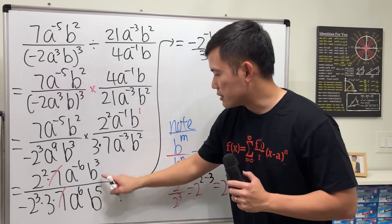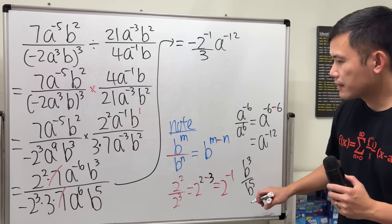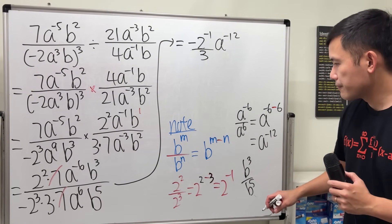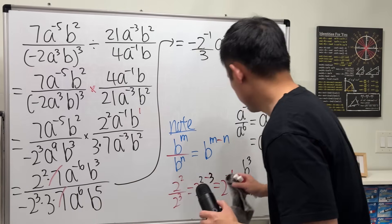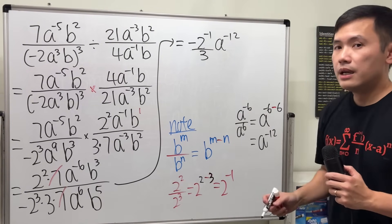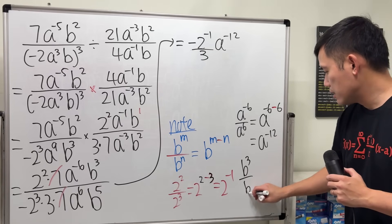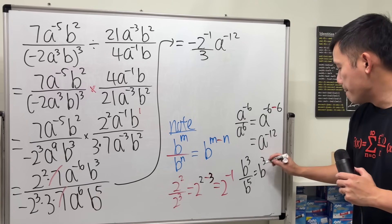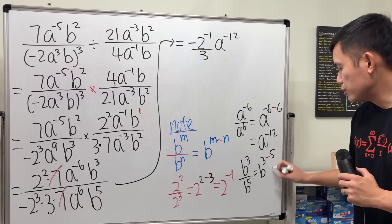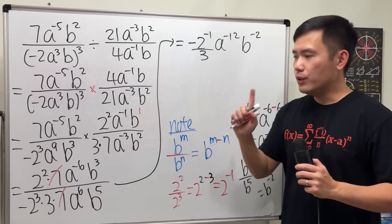Lastly, we have b to the 3rd over b to the 5th. That's b to the 3 minus 5, and 3 minus 5 is negative 2. So we will have b to the negative 2. Notice the 3 on the bottom right here already. Now here's one more part we will have to do — notice they all have negative exponents.